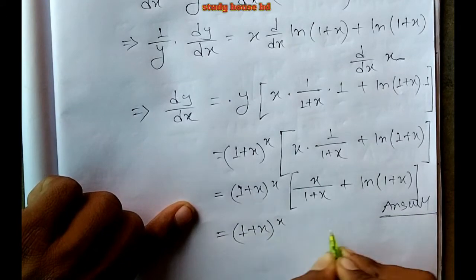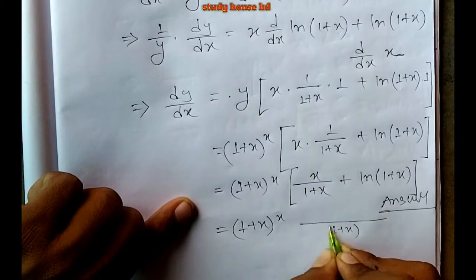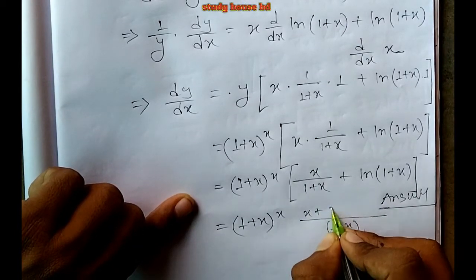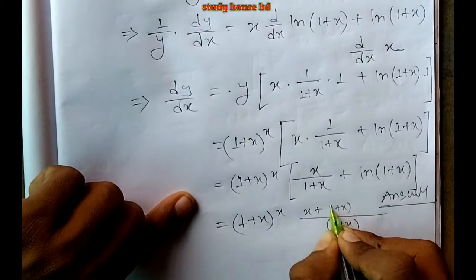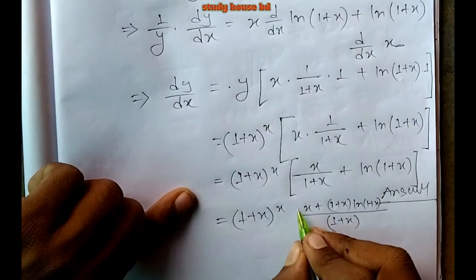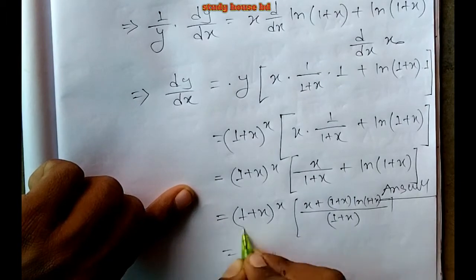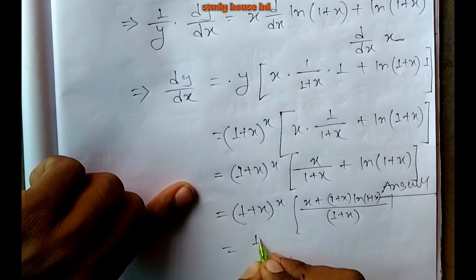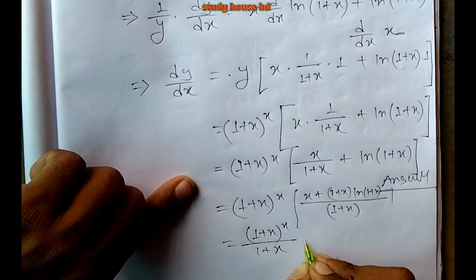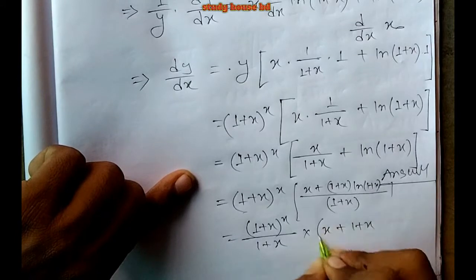Multiplying through by y, the final answer is dy/dx equals (1 plus x squared) to the power 2x times the quantity 2 ln(1 plus x squared) plus 4x squared over (1 plus x squared).